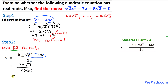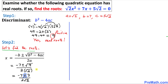So we have negative 7 plus or minus the square root of 9, which is 3, divided by 2 square root of 2. Now let's look at these two signs — one positive and one negative — and we are going to split them up and separate these into two cases.